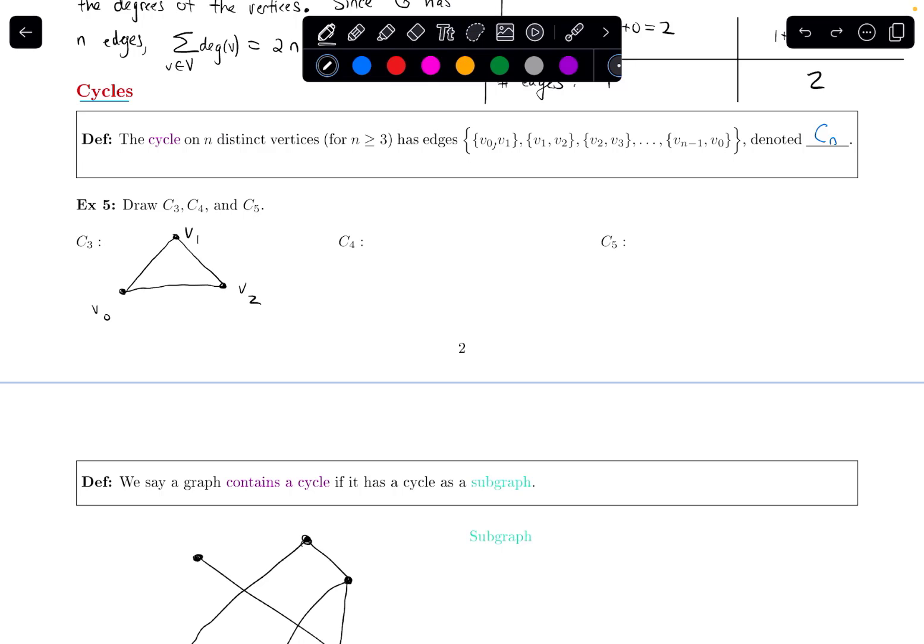So what about C4, a cycle with four vertices? Let's say that V0 is up here, and then V1 is here, and V2 is here, and maybe V3 is here. So V0 connects to V1, V1 connects to V2, V2 connects to V3, and then I've reached the last vertex, and now I connect it back to my starting point. And I've got a cycle. This is a cycle on four vertices.